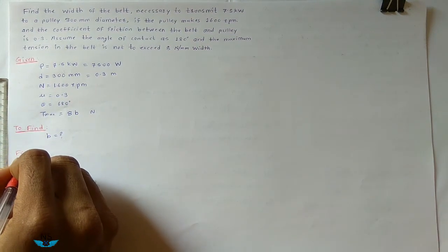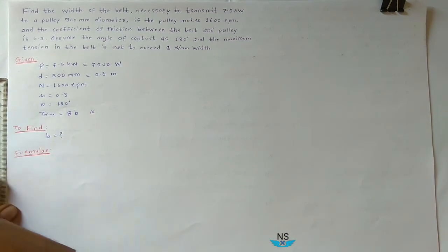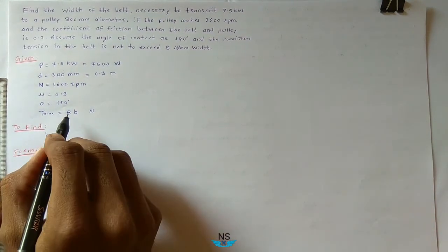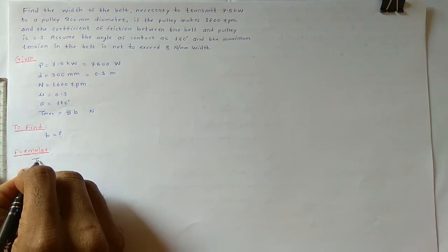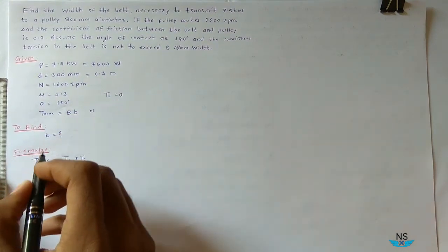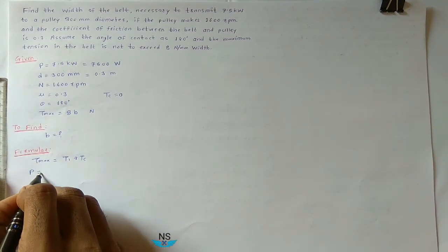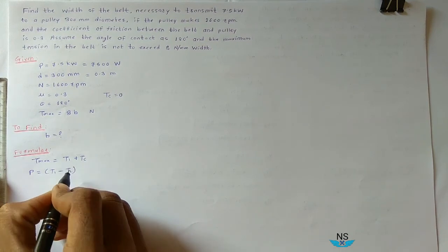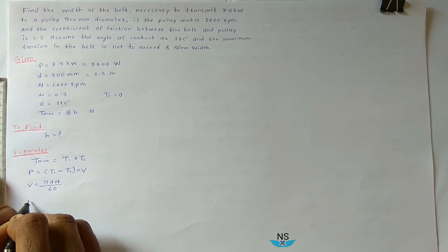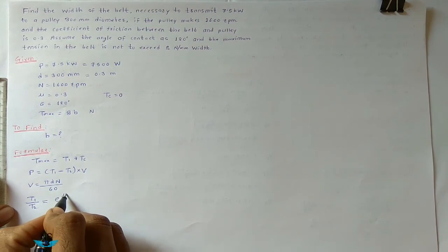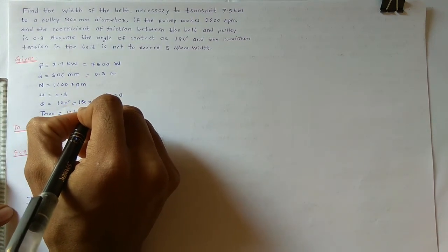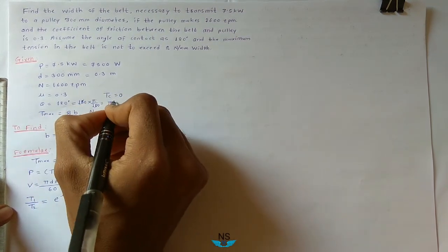Formulas required: To find B, you first need to find Tmax. Tmax is equal to T1 plus Tc. Since Tc is not given, Tc is equal to 0. To find T1, two formulas are needed: Power P equals (T1 minus T2) multiplied by V, where V equals pi times d times N divided by 60. And the tension ratio: T1 divided by T2 equals e raised to mu times theta. Note that theta in radians equals 180 times pi divided by 180, which equals pi radians.